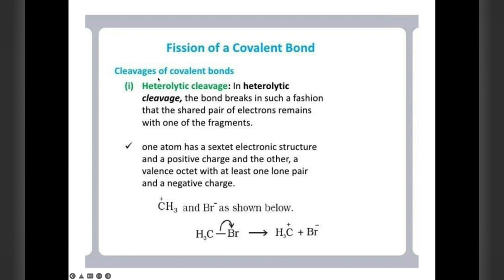Next is heterolytic cleavage. In heterolytic cleavage, bond breaks in such a fashion that shared pair of electrons remains with one of the fragments. One atom has a sextet electronic structure and a positive charge, and the valence shell with at least one lone pair and a negative charge. See here, CH3 and Br. When it splits, C gets positive charge, see here shifting is shown. Br is getting a negative charge. This part is called heterolytic cleavage.